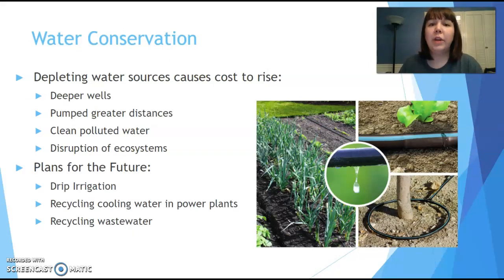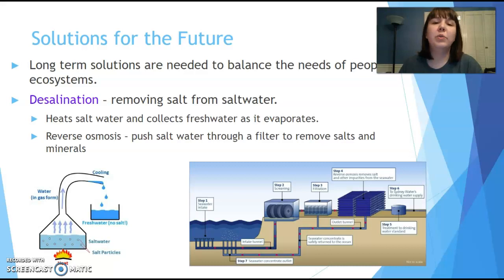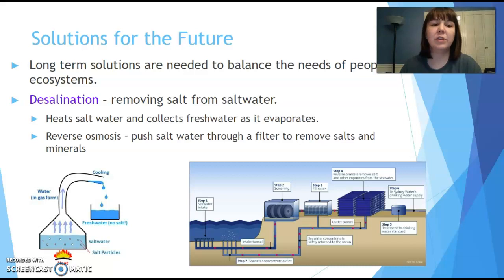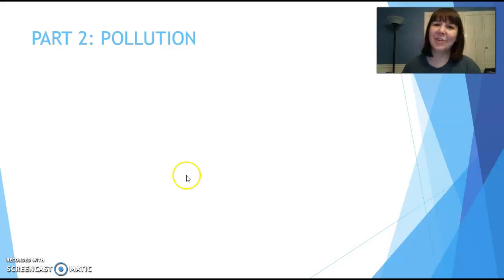In the future, we want to conserve water and use better water filtration. We can do that at home with shorter showers and planting crops that don't require as much water. We're also looking at desalination — taking salt water and purifying it to become fresh water — though it's currently very expensive. Tomorrow we'll talk about pollution: where it comes from, how it affects us, and how we can prevent it.